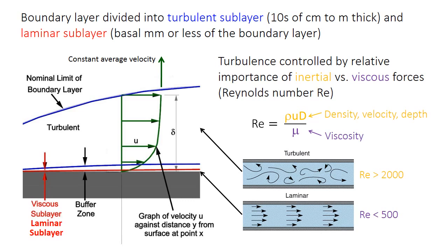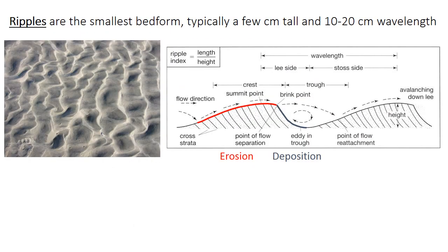These two sublayers turn out to be very important because they each influence different types of bedforms. Ripples are a very common type of bedform in unidirectional flow. They're quite small — on the order of a few centimeters tall — and they have wavelengths or spacing of around 10 or 20 centimeters. In cross-section, they have a very gentle upstream slope called the stoss side, and a fairly steep slope on the downstream face called the lee side. Looking at a ripple from above, its crest can be fairly straight, somewhat sinuous or wavy, or it can even curve into a little arc shape.